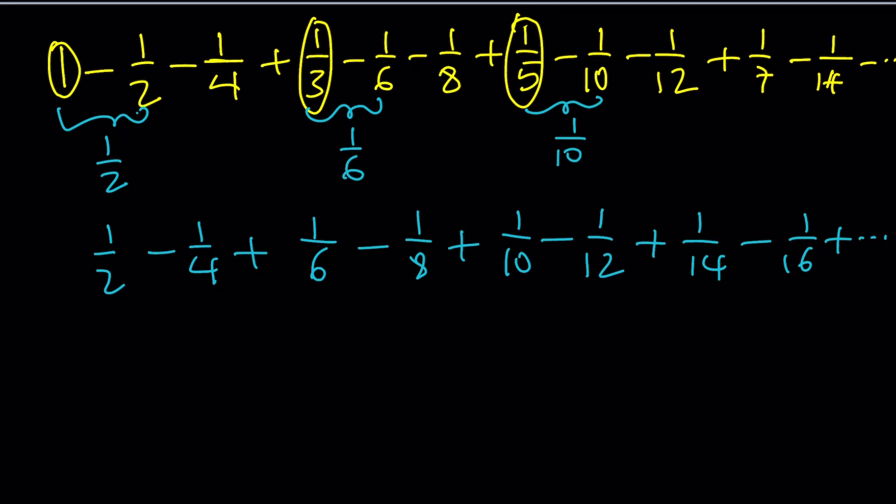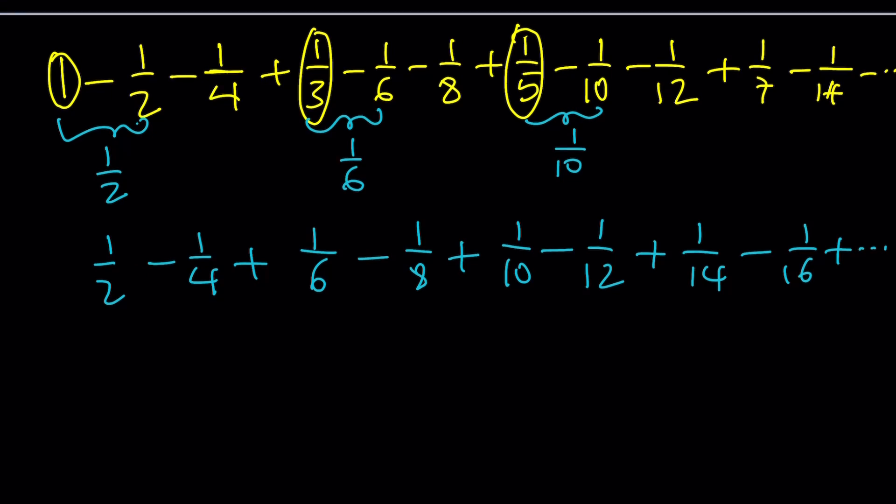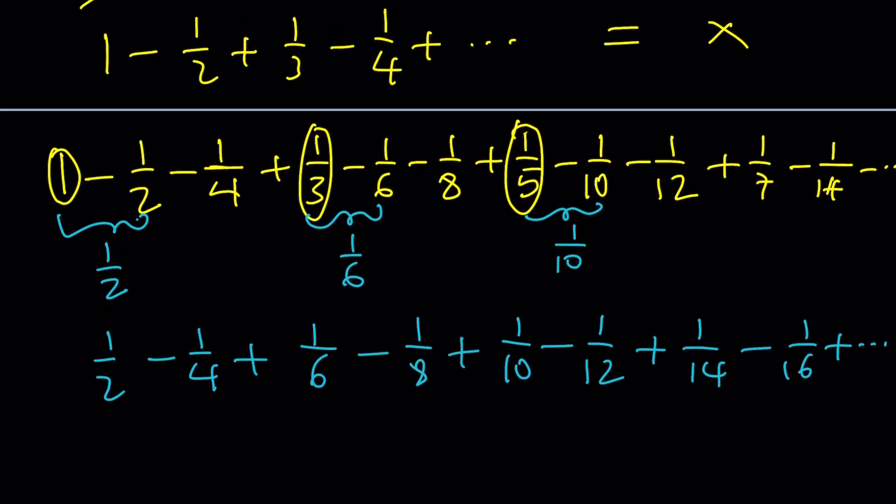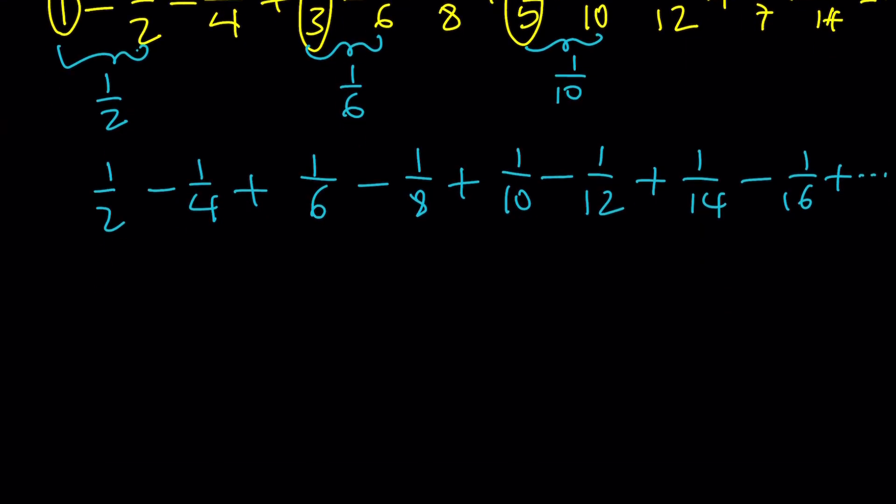If you look at this sum carefully, the rearranged terms, you're hopefully going to realize that I can actually factor out 1 half because everything is even. So let's take out a 1 half, and inside the parentheses we're going to get 1 minus 1 half plus 1 third minus 1 fourth plus 1 fifth. What happens is we get our x back.